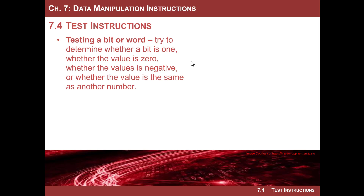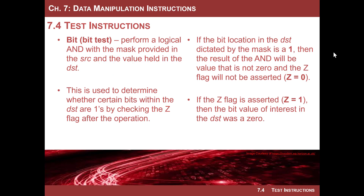We looked at how you could determine whether bits within a destination were ones or zeros by ANDing them with a mask and looking at the zero flag. That works, but the issue is that once you do that, you destroy the value held in the destination. So it's very common to want to know information about values while preserving them. That's what a test instruction is. I group these into a category called test instructions, and there are three of them for the MSP430.